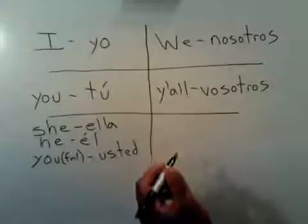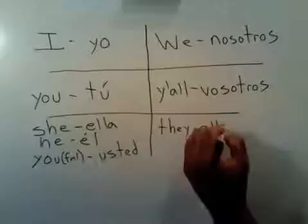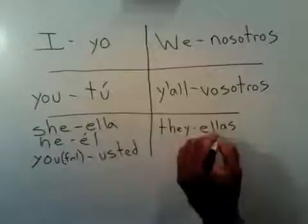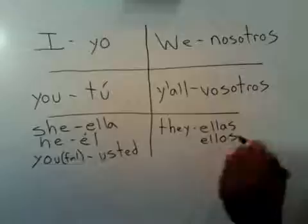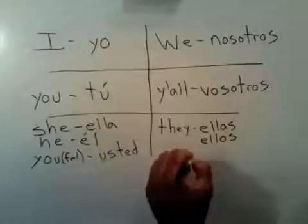In box number six, we have they. They can be expressed two different ways: it can either be ellas when you have a group of all females, or ellos when it's all males or a mixed group of males and females. There's also one more word in here — you. Here we go with you again, but it's on the plural side. This you is plural and it's ustedes.